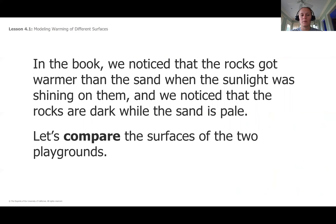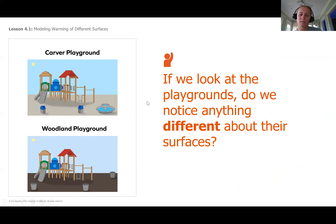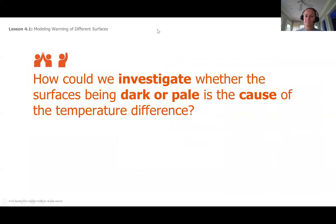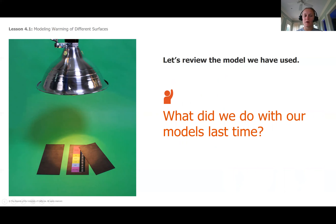In the book we noticed that the rocks got warmer than the sand when sunlight was shining on them, and we noticed that the rocks are dark while the sand is pale. Let's compare the surfaces of the two playgrounds. Do we notice anything different about their surfaces? I sure do - I notice that Carver playground is pale and Woodland playground is dark. How could we investigate whether the surfaces being dark or pale is the cause of the temperature difference?